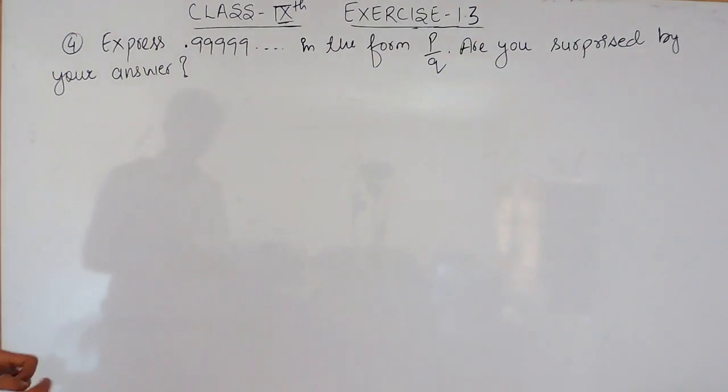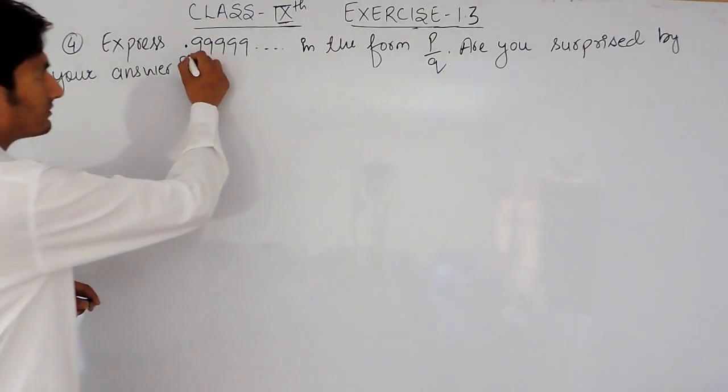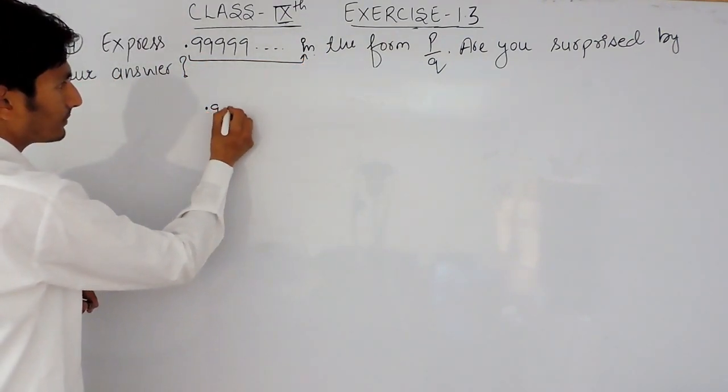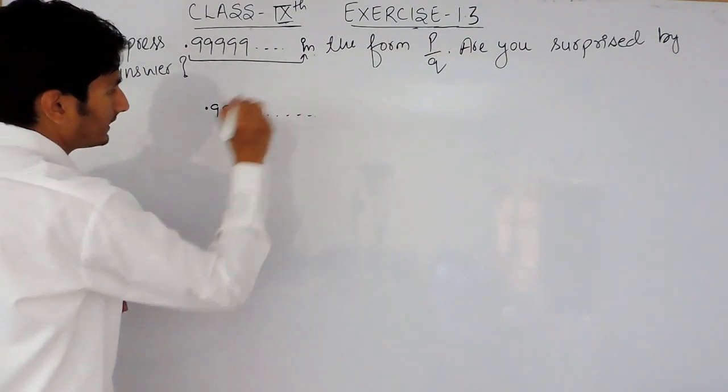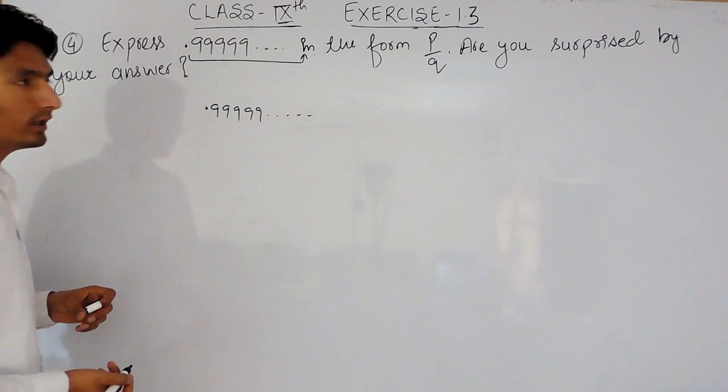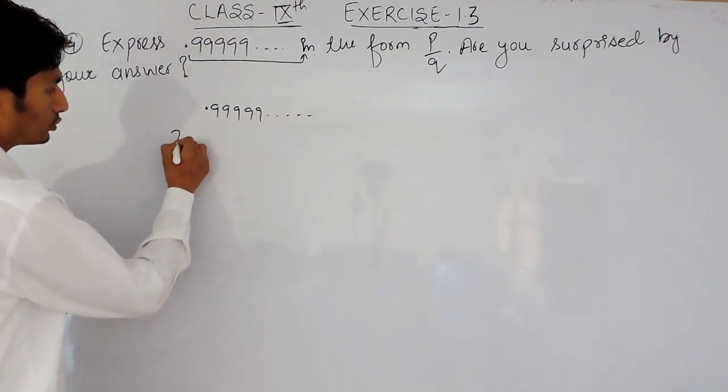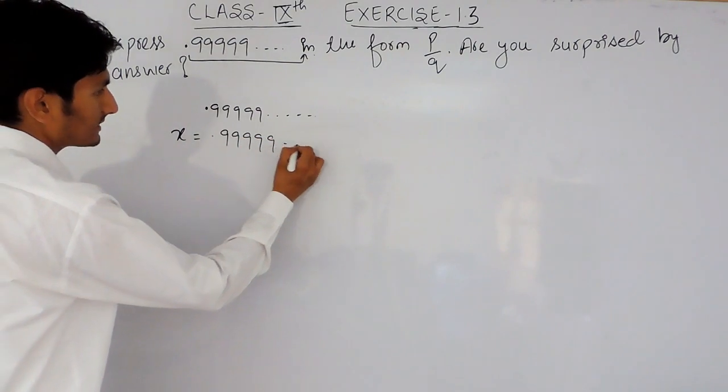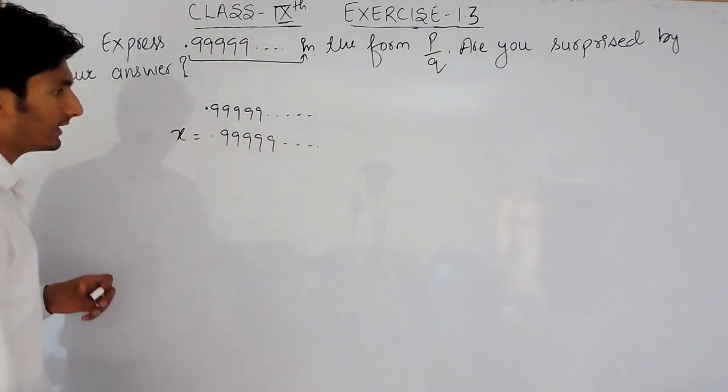Now, I have already discussed in the previous video that if there is a decimal expansion that is non-terminating and repeating, to convert this into the form of P upon Q, you have to consider this equation first of all as equals to x.